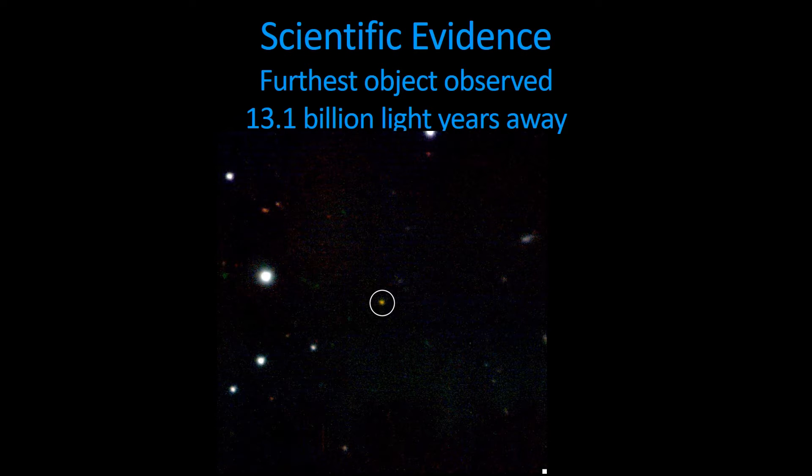Okay, the universe is a finite age. That means we should only be able to see so far away from us because the further away you look, the further back in time you look. We call that a light year. That's a distance light travels in one year. Now, if I tell you something's 2.2 million light years away, that means that light's been traveling for 2.2 million years. So you're seeing that object as it was 2 million years ago.